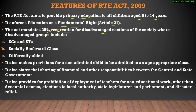It also makes provisions for non-admitted children to be admitted to an age-appropriate class — जितने भी non-admitted children हैं, उनको भी admission मिलना compulsory हो गया है. ये state करता है कि जितनी भी financial responsibility है free education देने के लिए, वो central और state दोनों की responsibility है — that means it is coming in your concurrent list.